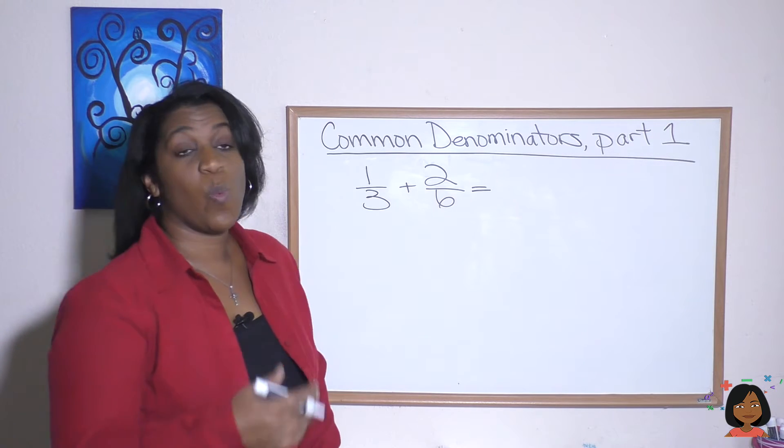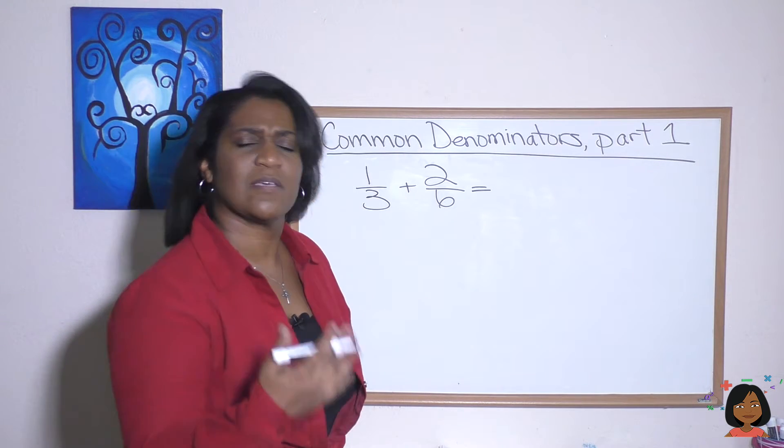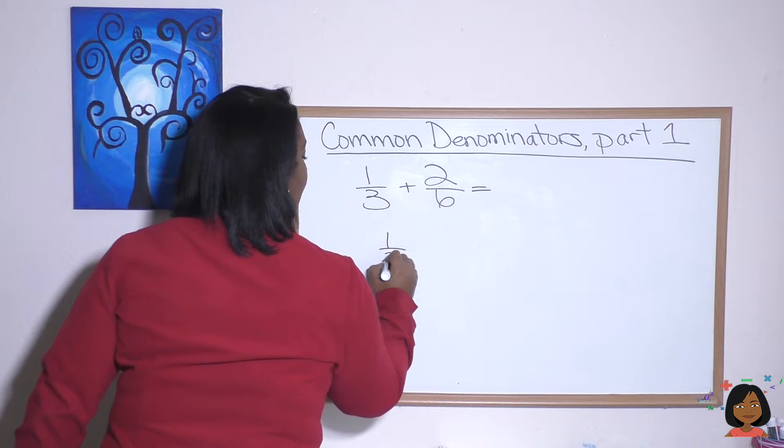Take a look at this example. One-third plus two-sixths. Let's first write it vertically, and then we'll look for a common denominator.